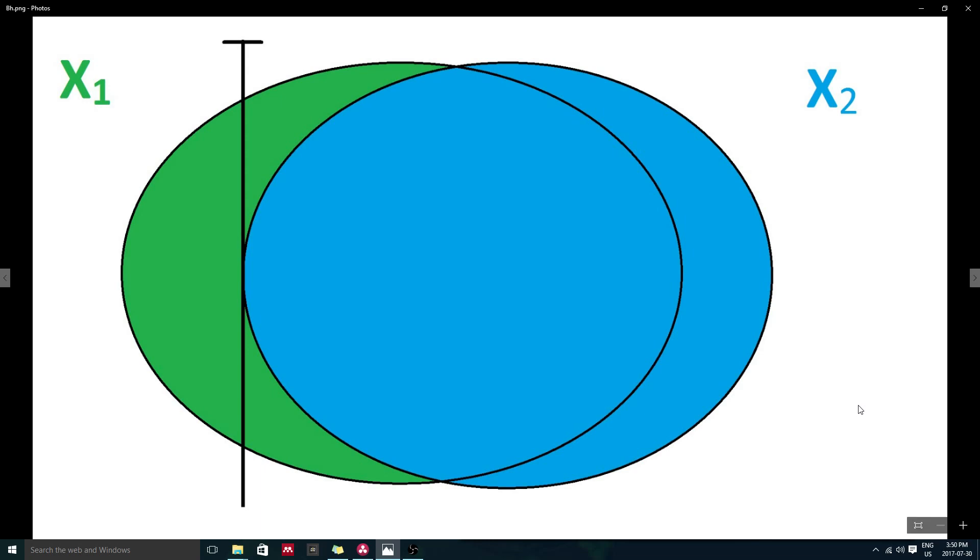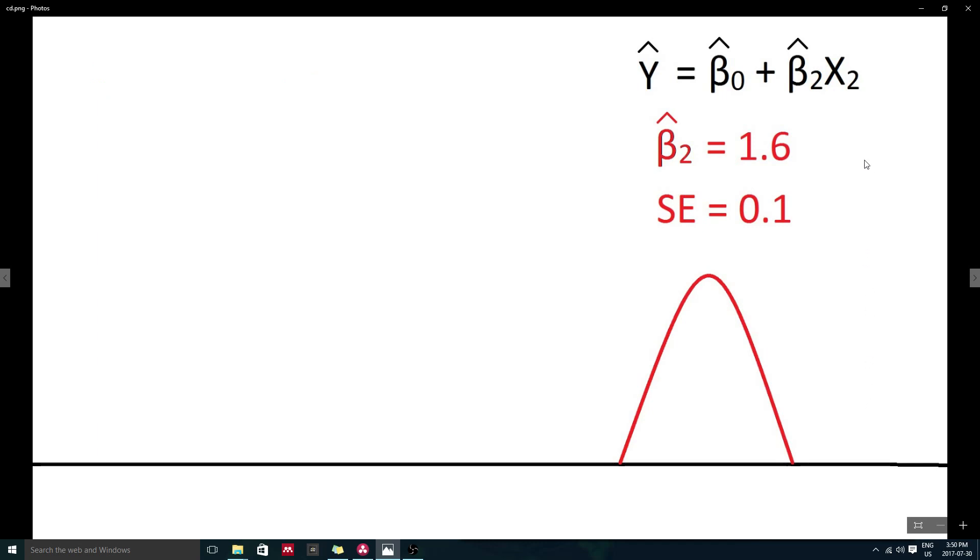To illustrate this, let's reconsider our example with some made-up numbers. We previously saw that a bivariate model suggested x2 to be highly positively related to y. Perhaps x2's regression coefficient was equal to 1.6, with a standard error of 0.1.